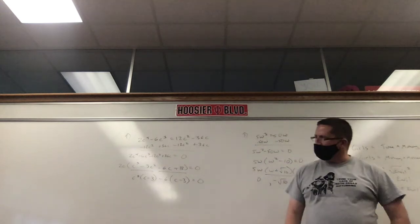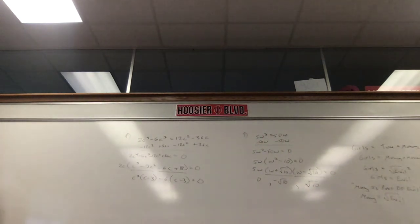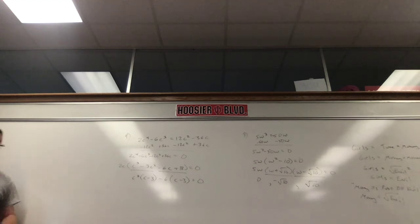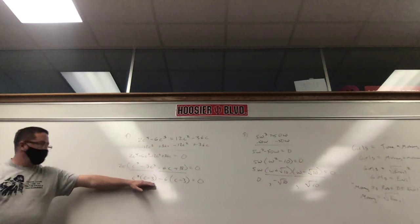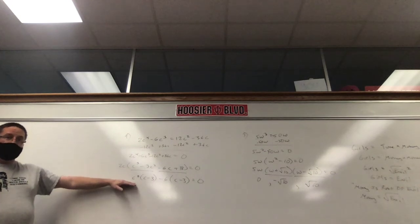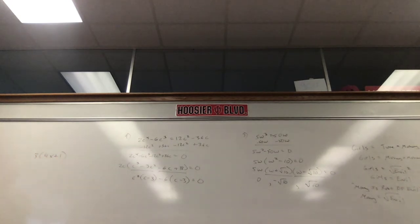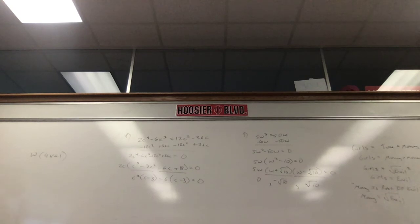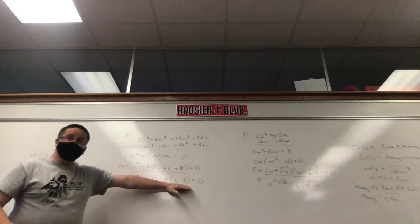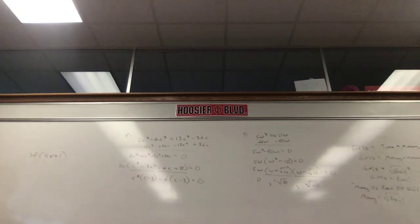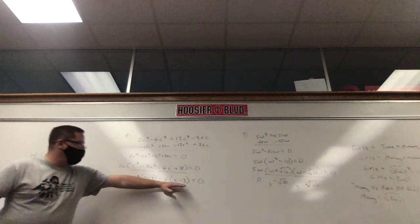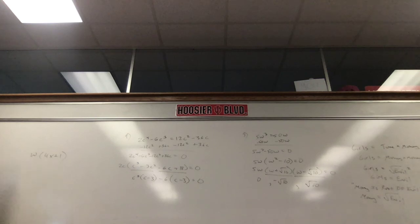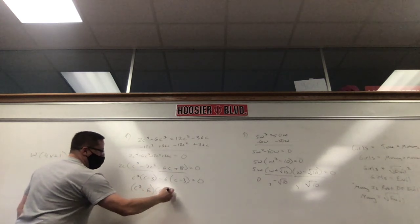The stuff in the parentheses is the same — very good. So we have c²(c−3) and −6(c−3). How many (c−3)s do we have? c² of them plus negative 6 of them. So we combine: (c² − 6)(c − 3). That gives us 2c(c² − 6)(c − 3) = 0.